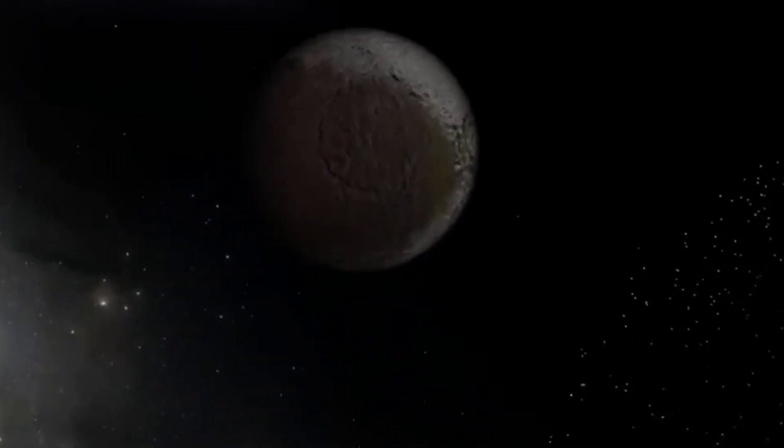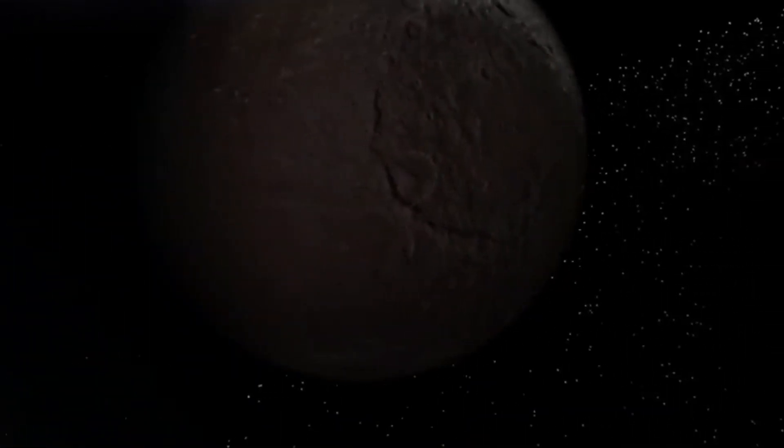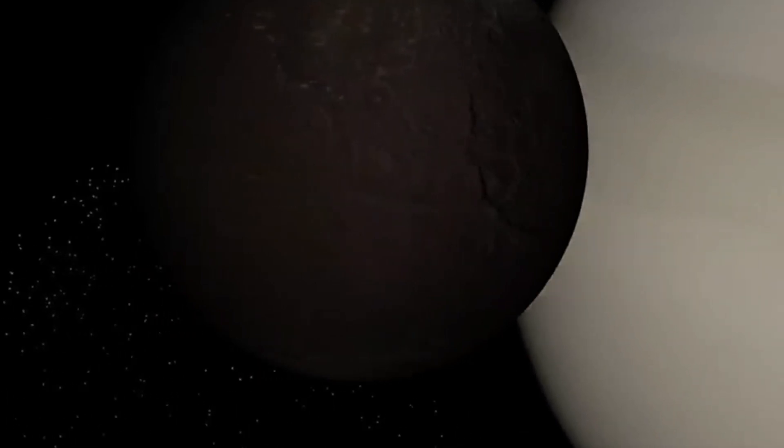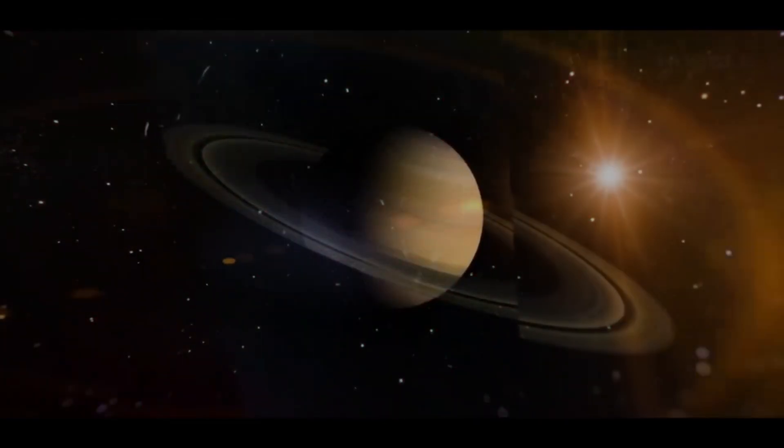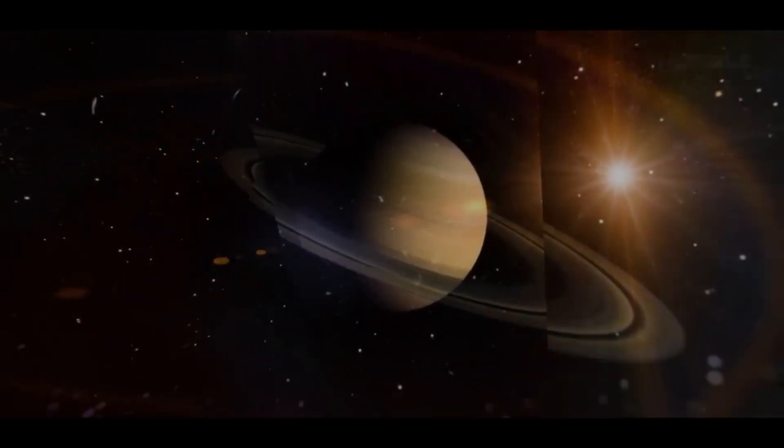Fortunately, Iapetus reappeared, but 79 days later. Remarkably, it was exactly where Giovanni Cassini first saw it. So why did Iapetus disappear?